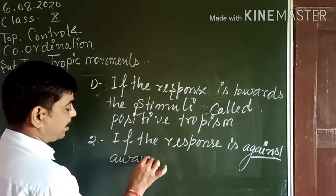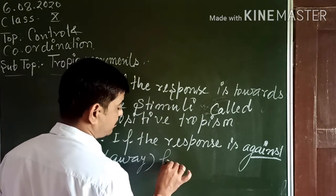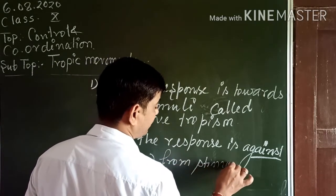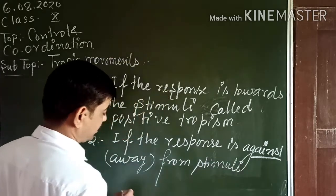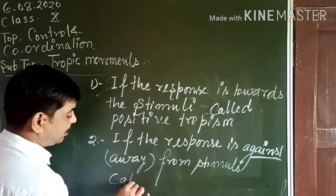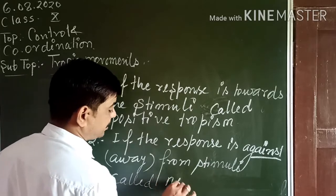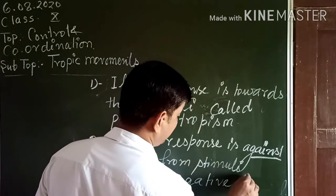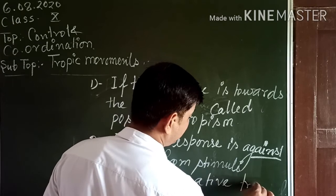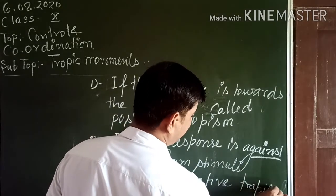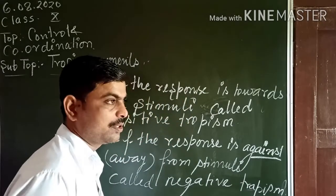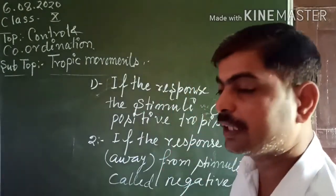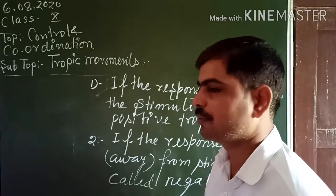Remember: if the response is towards the stimuli, it is positive tropism. If the response is away from the stimuli, it is negative tropism. Positive tropism is towards the stimulus, and negative tropism is away from the stimulus — two types of response.